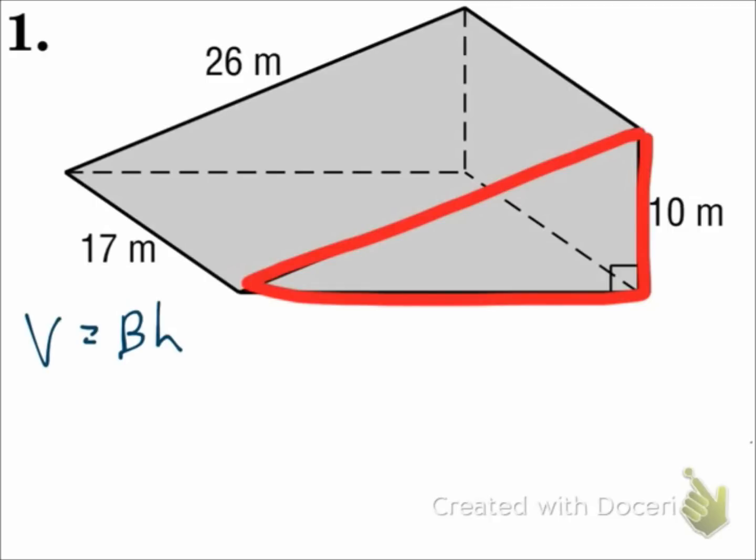Area of a triangle is one half base times height. But I don't know the height of the triangle. It is a right triangle and I know two sides. One side is 10 and the other one here is 26.